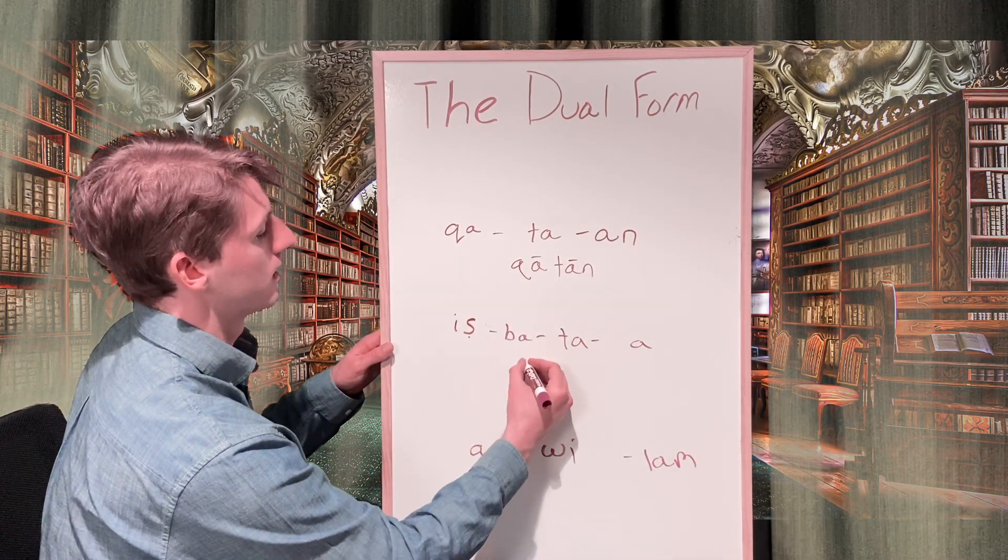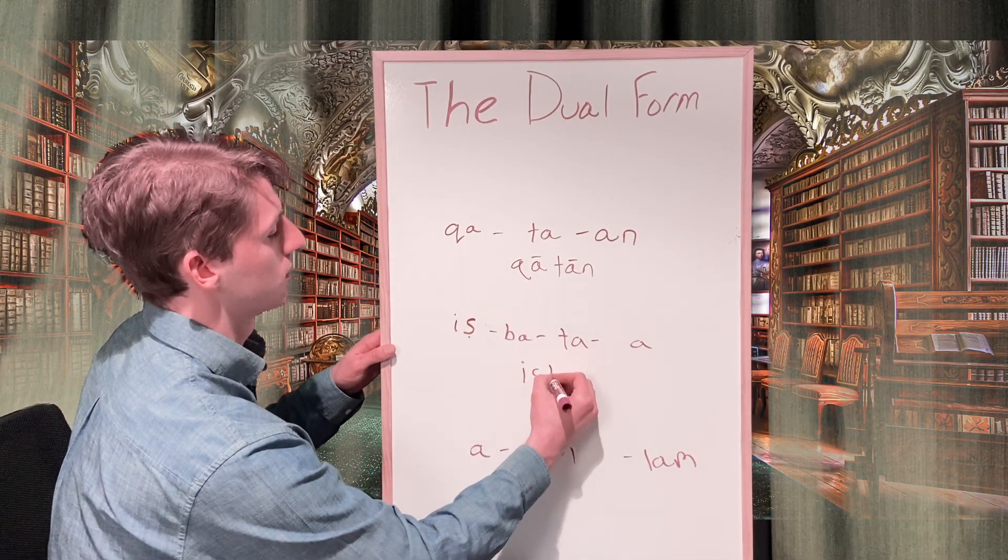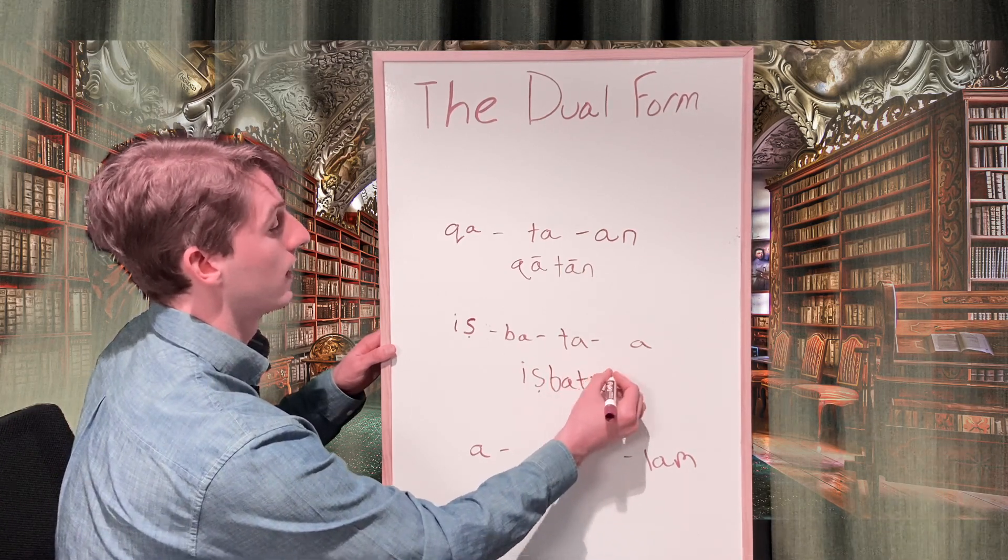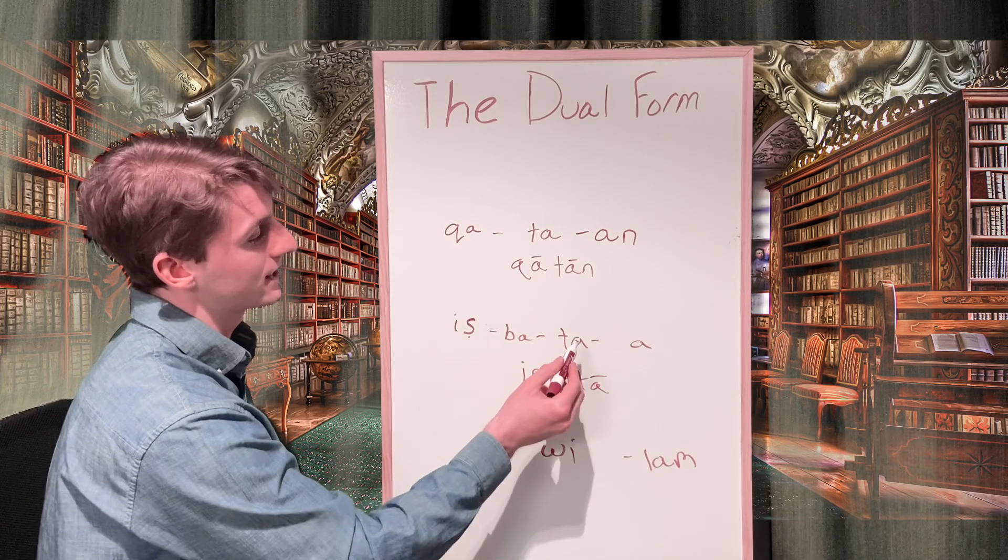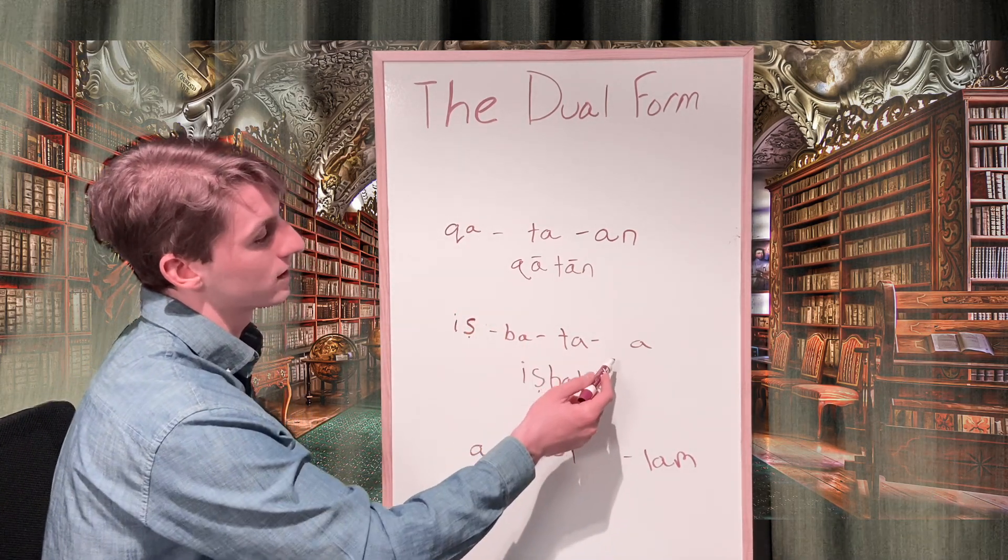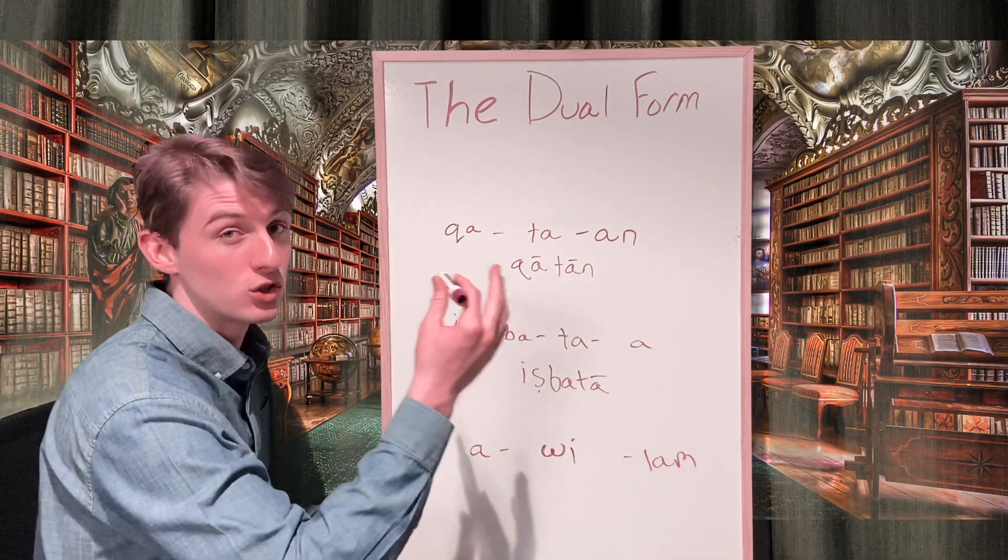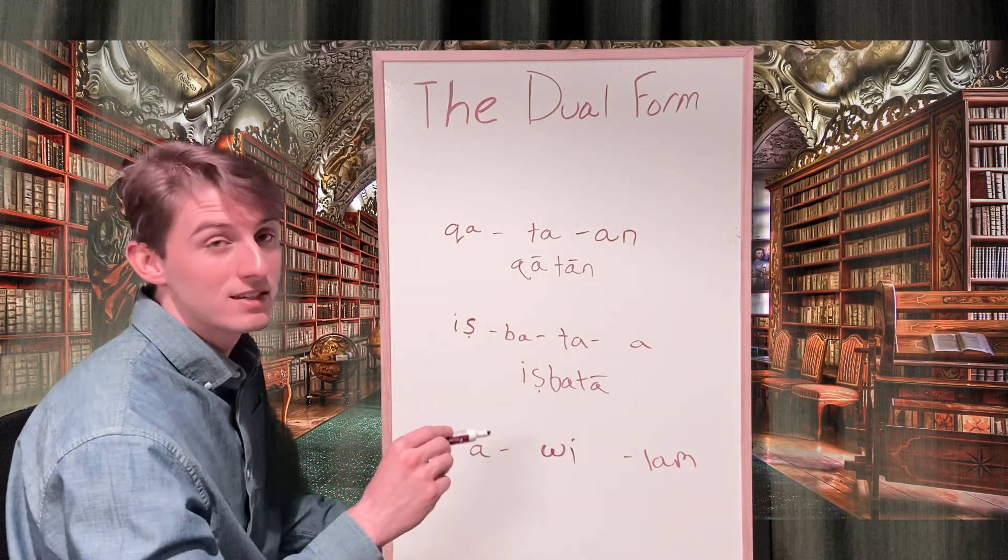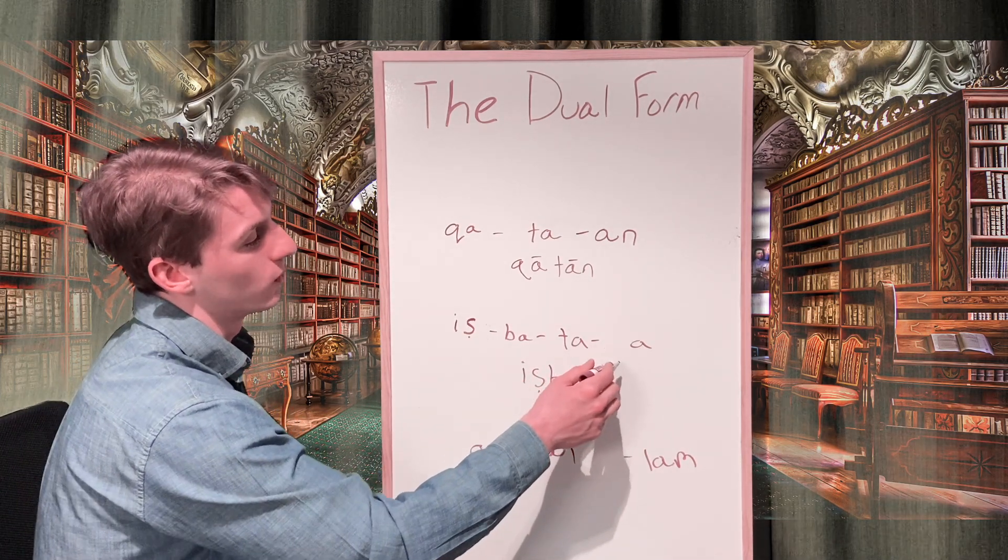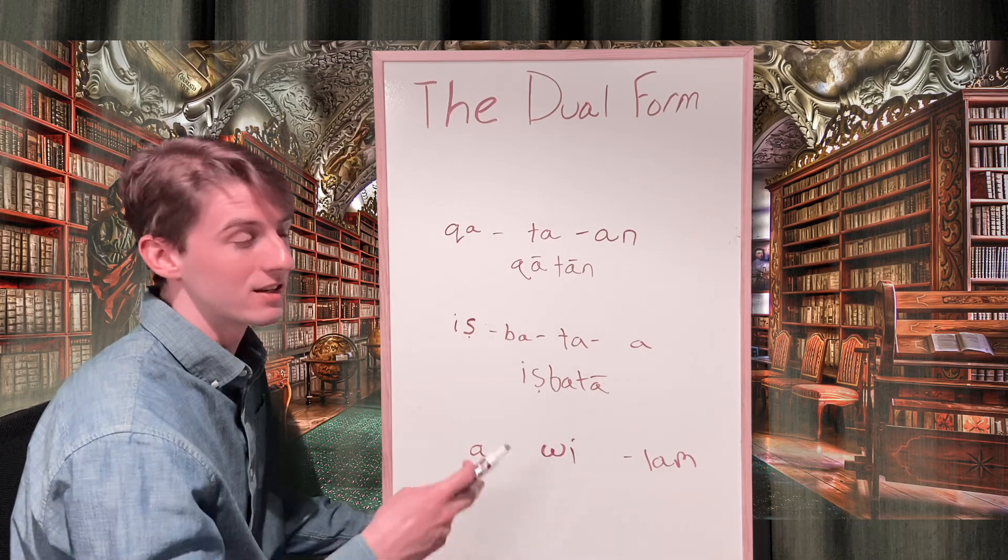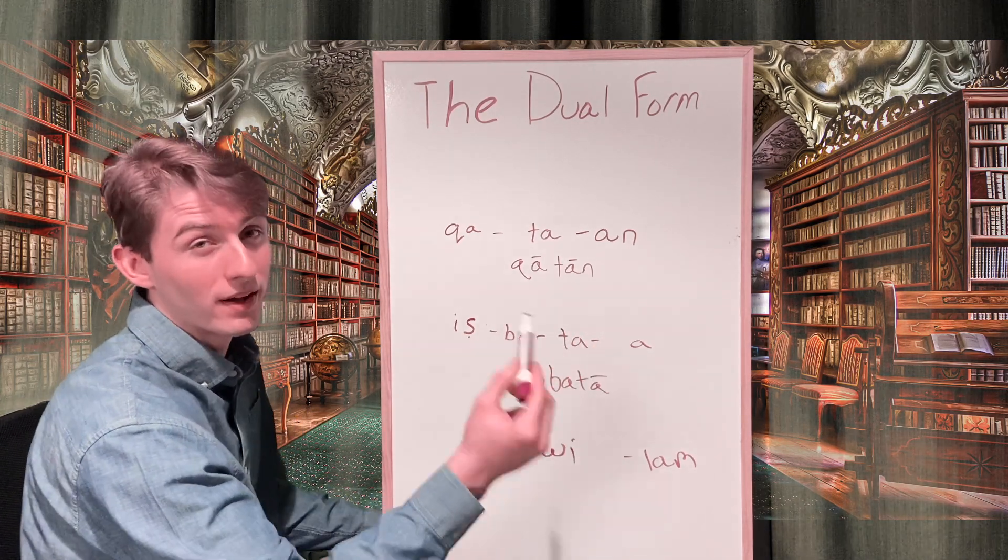The next word is going to normalize to itzbata again with the long A. In this case we have what's called a plene spelling and this is a special circumstance which actually is going to suggest that it should be lengthened. We'll see this sometimes in cuneiform where the scribe seems to have just tacked on a vowel that we wouldn't necessarily need in order to spell the word and that's more than likely going to suggest that you're going to lengthen the vowel at the end of the word.